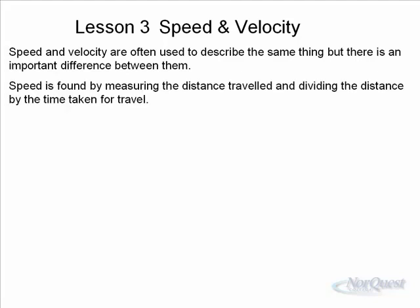First, to define them, speed is found by measuring the distance traveled and dividing that distance by the time taken for travel. So, speed is distance over time.